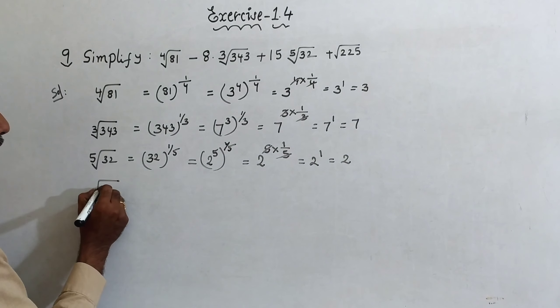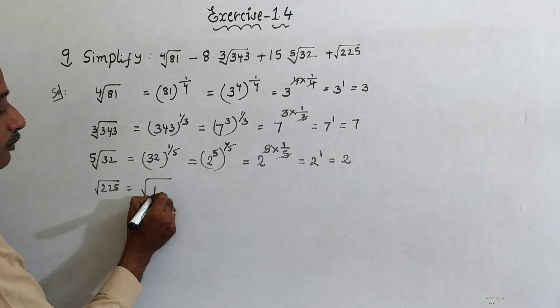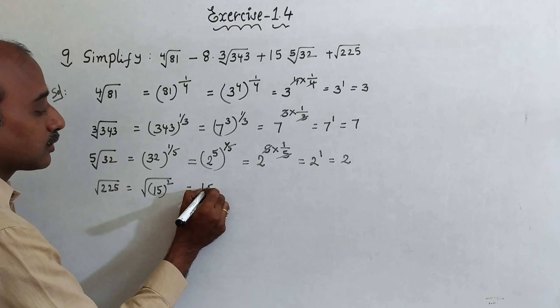Next, under root of 225. This you can write under root of 15 square, square root cancel, that is equal to 15.